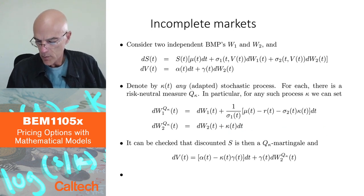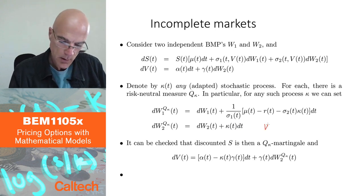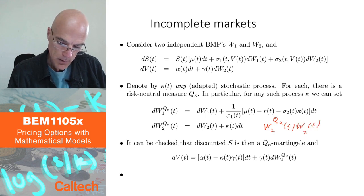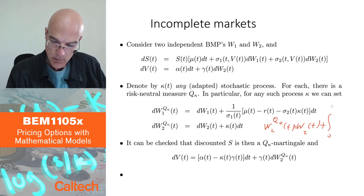This means really the integrated form as usual. It means that W2^{Q_kappa}(t) is W2(t) plus integral 0 to t kappa(s) ds. That's what it means.